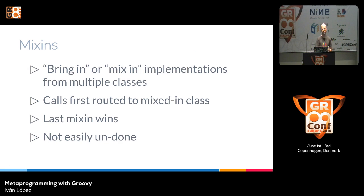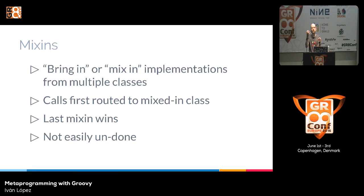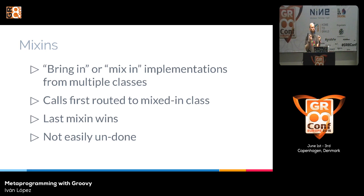Now let's talk about mixins. With mixins, we can mix in or bring multiple implementations from different classes into our target class. When we invoke a method, Groovy calls it first on the mixin classes; if it doesn't exist there, the target class handles it. We can add multiple classes as mixins, and if those classes have the same method signature, the last one wins. As with meta-class modification, mixins are not easily undone.